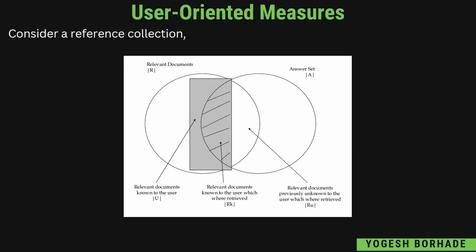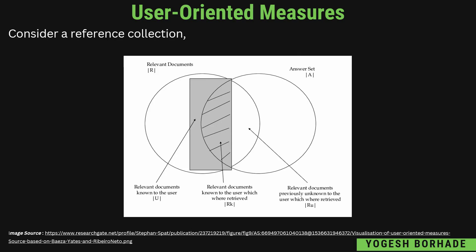वो जो known case में आ जाएगा। फिर यह जो line वाला part है, grey वाला, वो denote कर रहा है relevant documents known to the user which were retrieved — यह intersection का grey color part है जो बताता है कि documents relevant भी हैं और user को पहले से मालुम भी थे और retrieve भी हुए। उसको हम denote करते हैं R(k) से। K मतलब known to the user, R(u) मतलब relevant और unknown to the user। इस image के base पे हमें formulas calculate करने हैं।